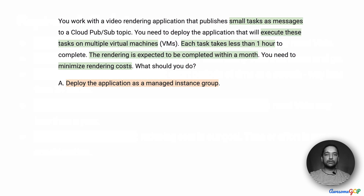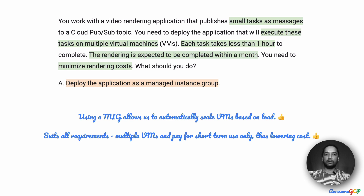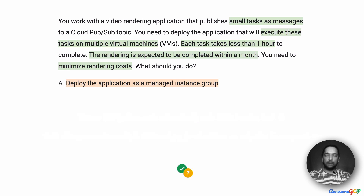Option A suggests deploying the application as a managed instance group. Using a managed instance group allows us to automatically scale VMs based on load — we identified this as a solution we'd like in our requirement analysis. As messages come in with rendering work required, we bring up a VM and shut it down afterward. In fact, using a managed instance group suits all our requirements: multiple VMs, pay only for what we use, and lower cost. So option A is a very good option, but let's look at every single option before deciding.